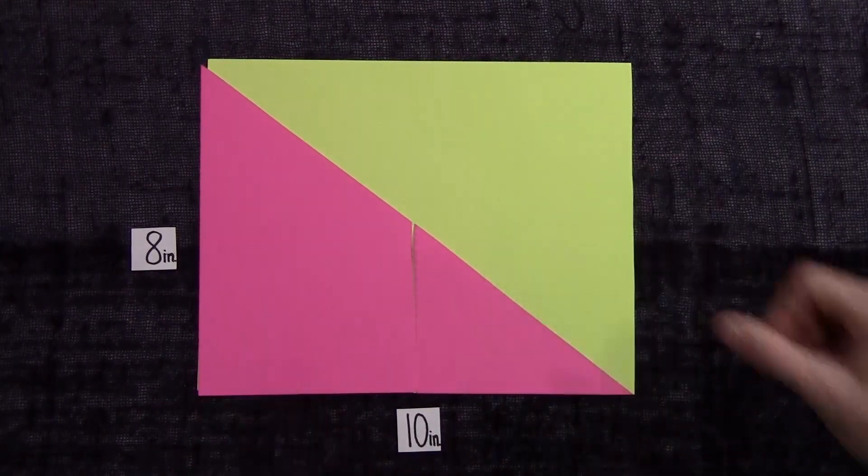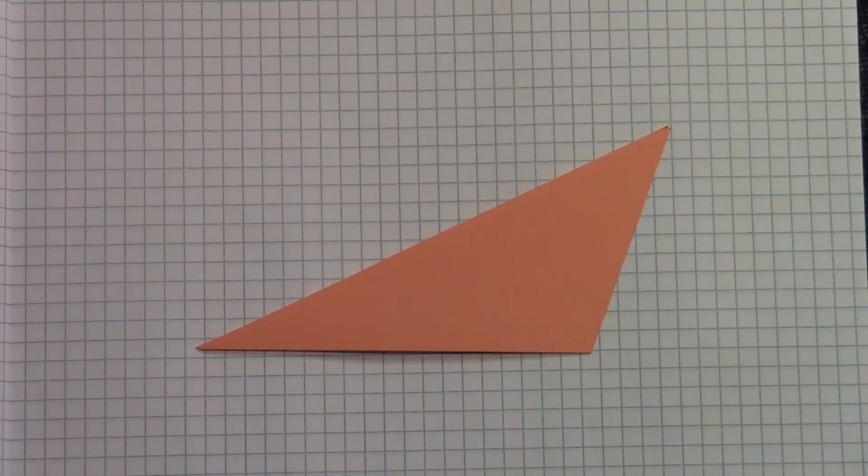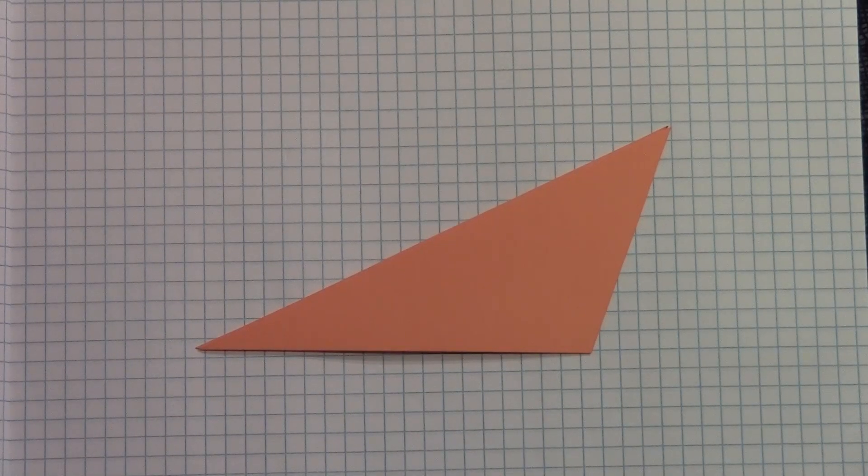1 half of the base times height. Not all triangles have right angles, though. Don't worry, we'll talk about those, too.